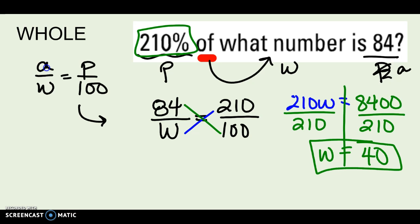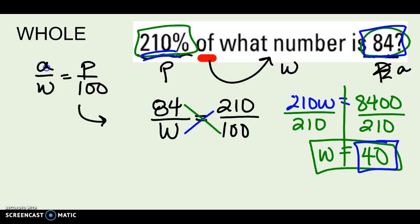Let's see if that makes sense. 210% of what number is 84? If I start with 40 and take 210% of that, yeah, it makes sense that I'd double it plus a little bit more and end up with 84. In this one, I ended up with a part that was bigger than the whole — that's fine, as long as I'm talking about more than 100%. So don't freak out; you can get a part bigger than the whole when it's more than 100 percent.